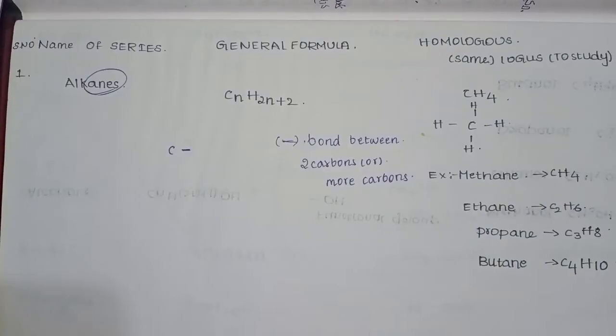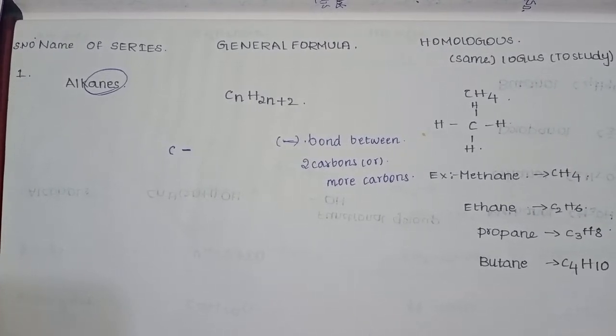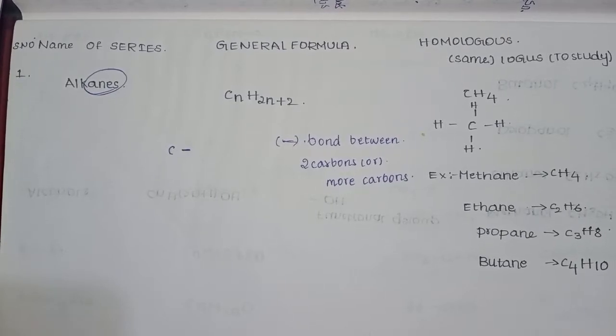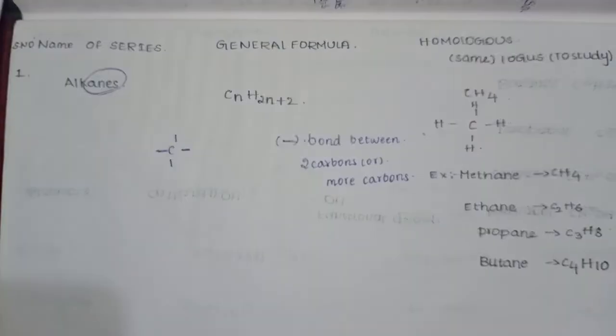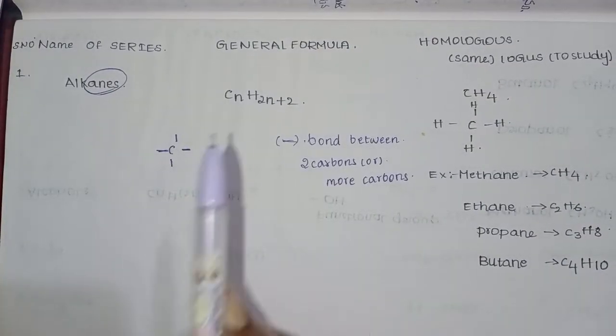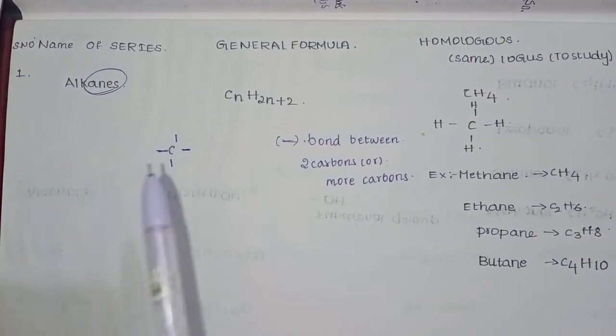For example, methane, ethane, and propane. Methane has one carbon, ethane has two carbons. Now I will talk about methane. Methane is nothing but only single carbon with four hydrogens. This is the carbon.